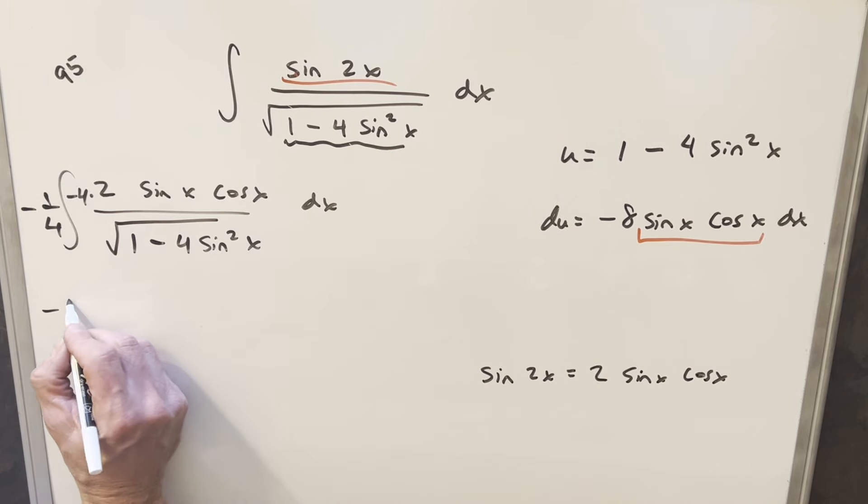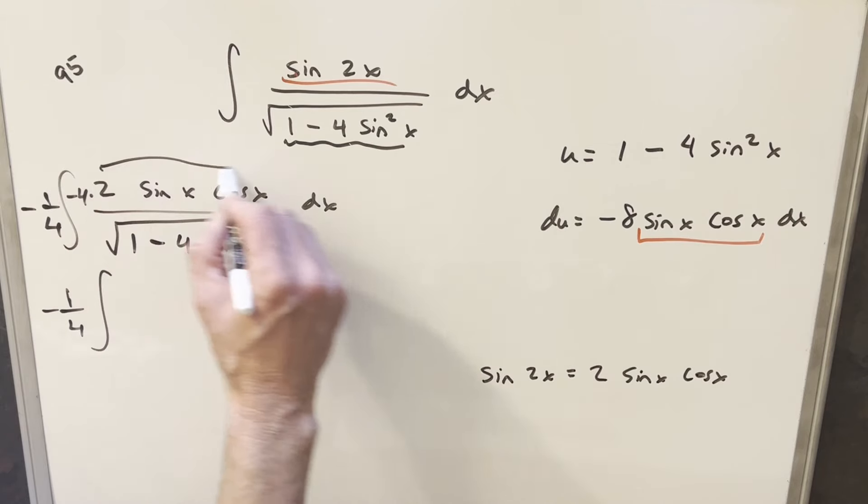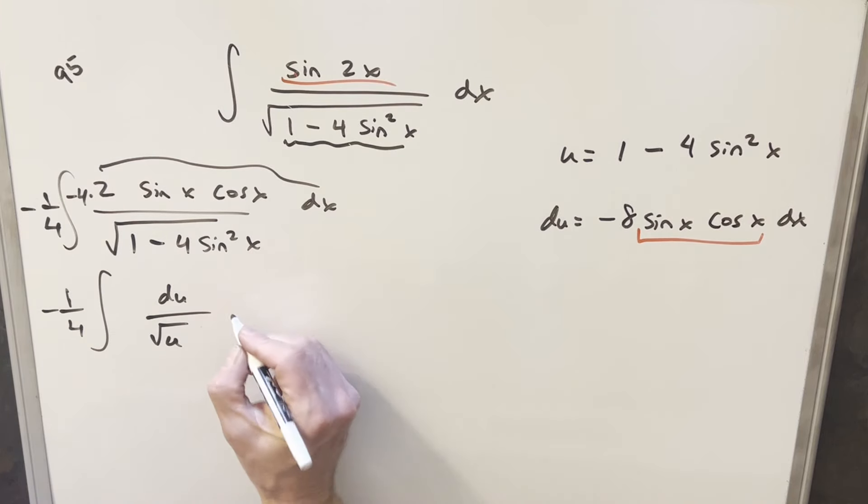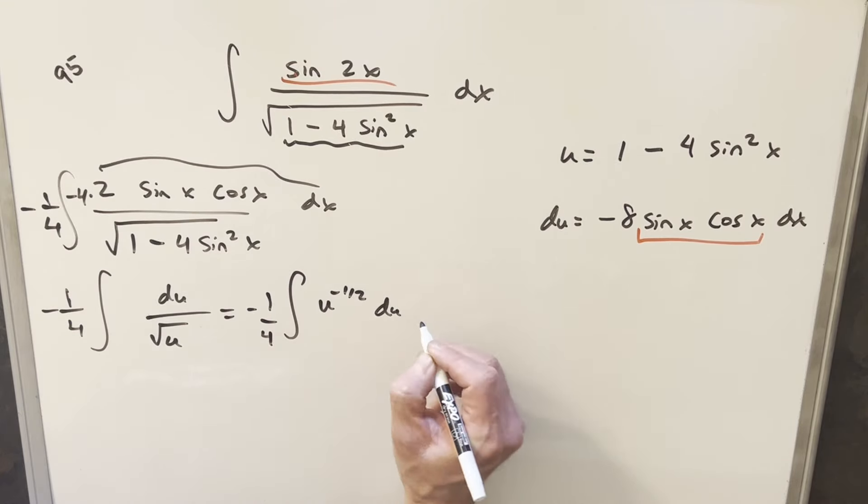And so now we'll substitute. Everything in the numerator is the du, so we're just going to have du over the square root of u. Let me rewrite it so it's clear that I'm going to use the power rule. So we'll rewrite this as u to the minus 1 half du. And so now I'll use power rule.